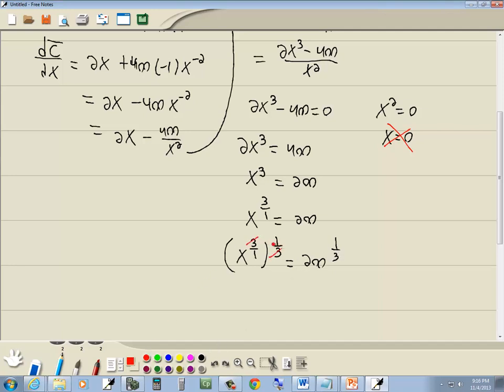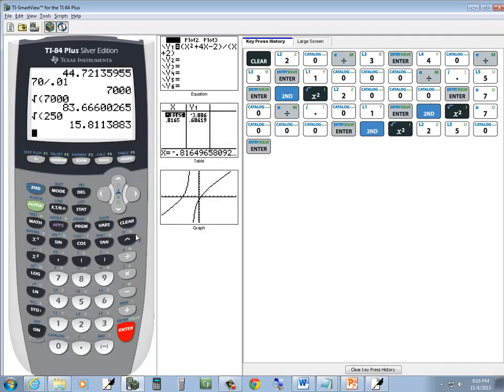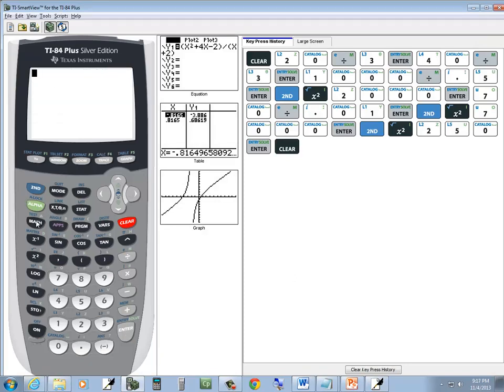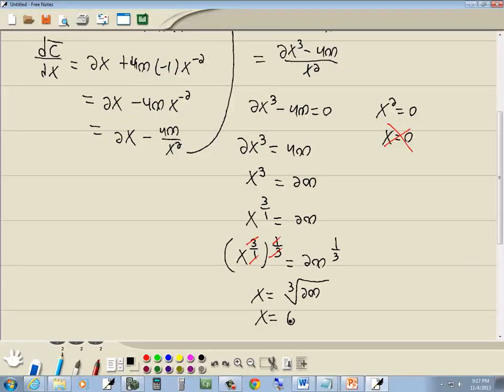Now I'm going to do that. These 3's cancel, the 1's cancel. And we got x is equal to 1 third power is the cube root. So we got x is equal to the cube root of 200. Let's go see what that's equal to. So cube root, I'm going to my math, choose number 4, and cube root of 200 gives us 5.8. Now I'm going to round it like normal, so that will be x equals 6.